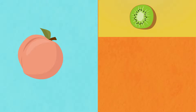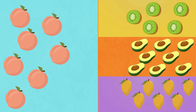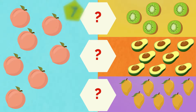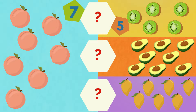Kiwi. Avocado. Mango. Let's compare. One. Two. Three. Four. Five. Six. Seven. Seven peaches. One. Two. Three. Four. Five. Five kiwi. The peaches are more than the kiwi.